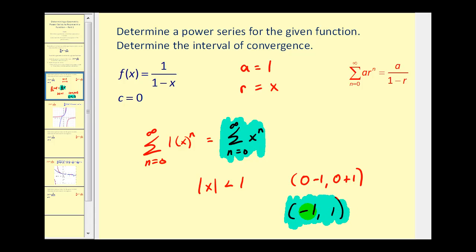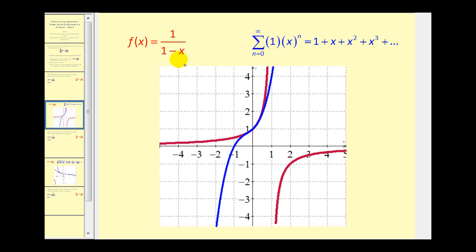Let's take a look at this graphically. Here we see the original function graphed in red and the first four terms of the power series graphed in blue. We can see that around x equals zero, where this power series is centered, the blue function is a very good approximation of the red function.